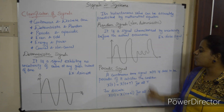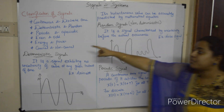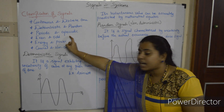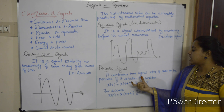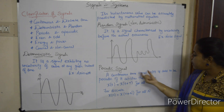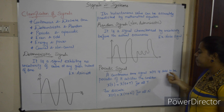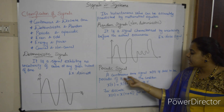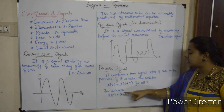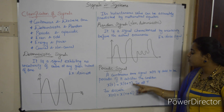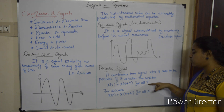Next classification is periodic and aperiodic signals. A periodic signal — a continuous time signal x(t) is said to be periodic if it satisfies the condition x(t) = x(t + T) for all values of t. Here T is the period.